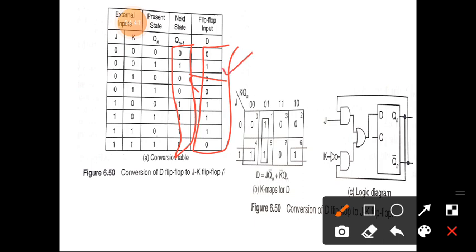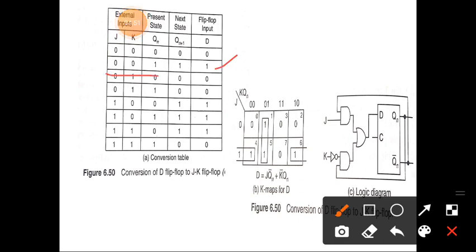From this, we construct the K-map for D, where J, K, and Q_N are the input variables. The D input is 1 for the combination 0,0,1. Then D input is 1 for J,K,Q_N equal to 1,1,0 and 1,0,1 — placing 1s in the corresponding K-map cells. Also, 1,1,0 and 1,0,1 are filled in.